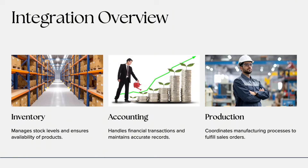For integration with FI (Financial Accounting): when billing is created in SD, it automatically posts accounting entries in FI. The system records revenue, tax, and customer receivable accounts. Payments from customers are also handled in FI, completing the financial side of the sale. For example, an invoice created in VF01 automatically posts to FI as: debit customer, credit sales revenue. For integration with PP (Production Planning): when a product is made to order, SD triggers a production order in PP. Once production is complete, goods are received back into inventory and then delivered via SD.